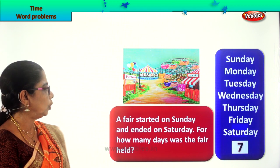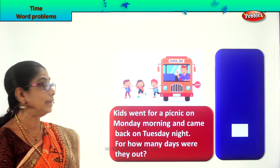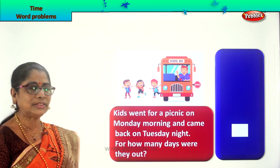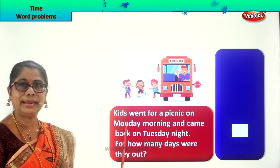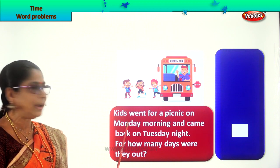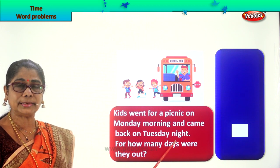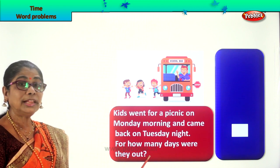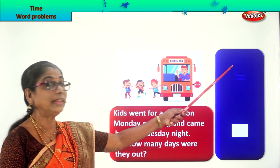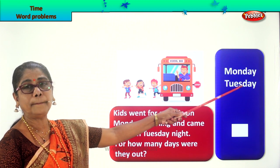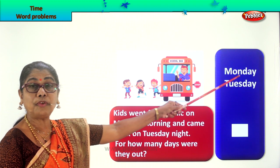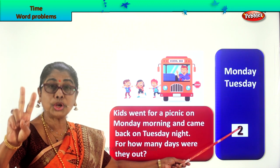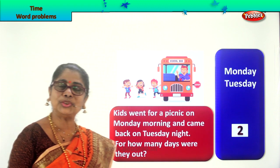You enjoyed the word problem in time! Let's take another. Here is the school bus. You get into it and go for a picnic, and the children are all very happy. Let's read the problem: Kids went for a picnic on Monday morning and came back on Tuesday night. For how many days were they out? They were out on Monday and Tuesday — full Monday and Tuesday, because Tuesday night they came back. So the kids were out for two days. They were out for two days, enjoying themselves.